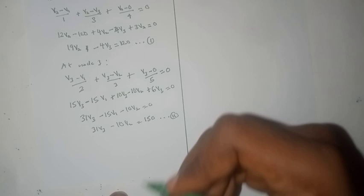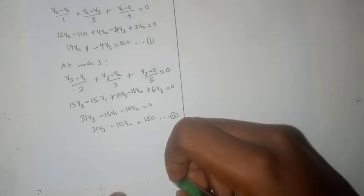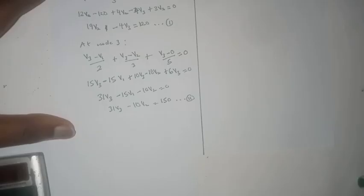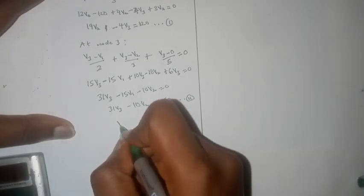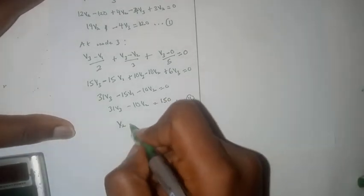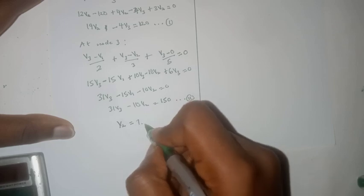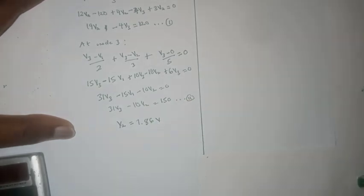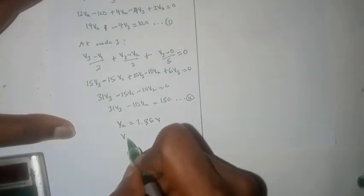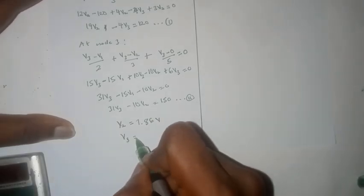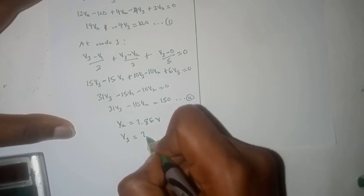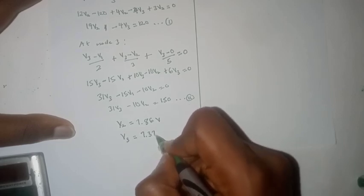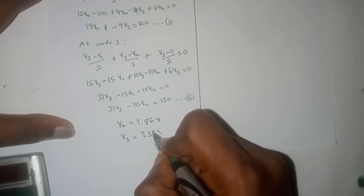Then we can use a calculator to solve this simultaneously. V2 would be equal to 7.86 volts, while V3 would be equal to 7.37 or 7.38 volts.